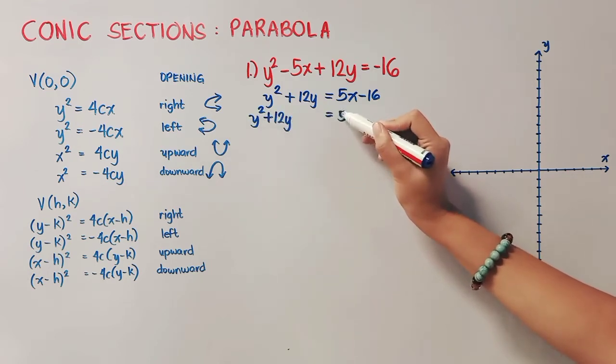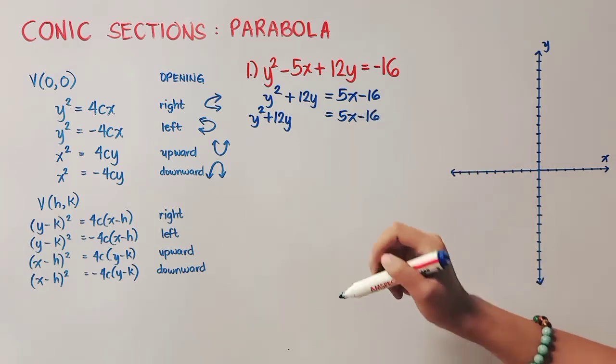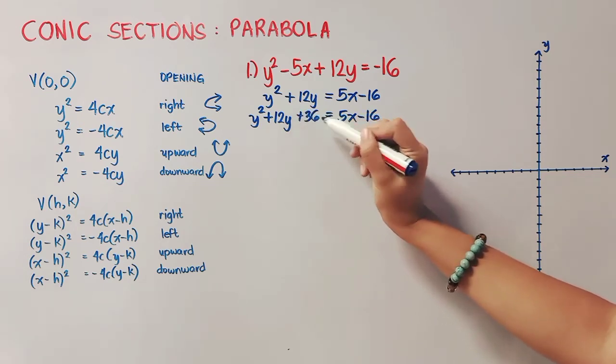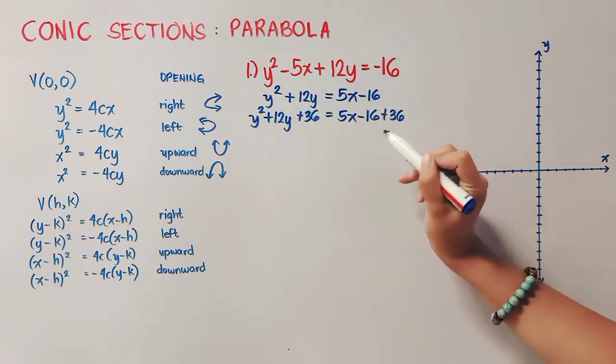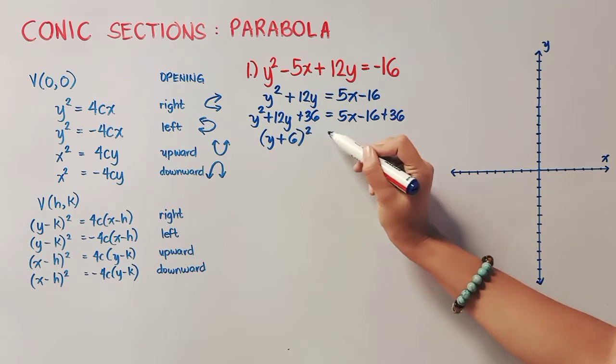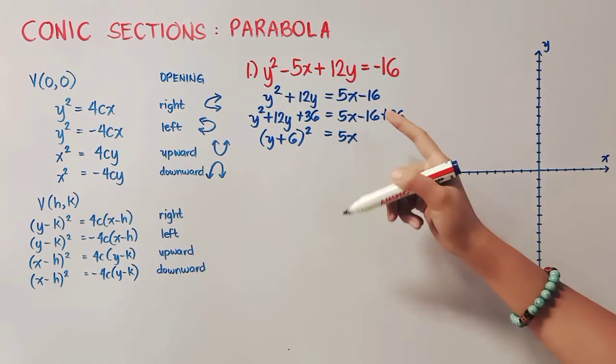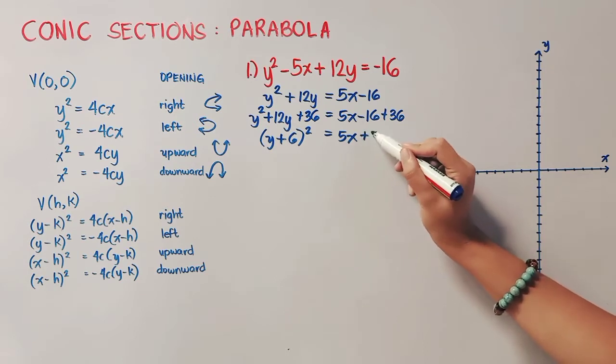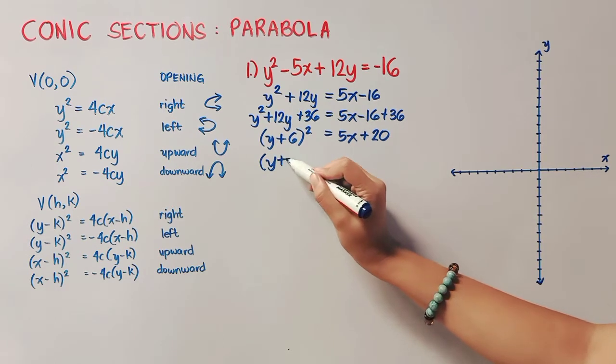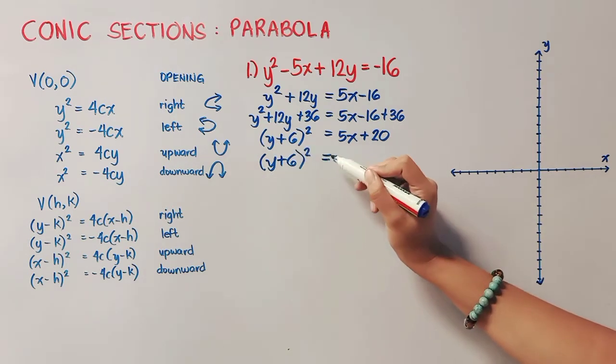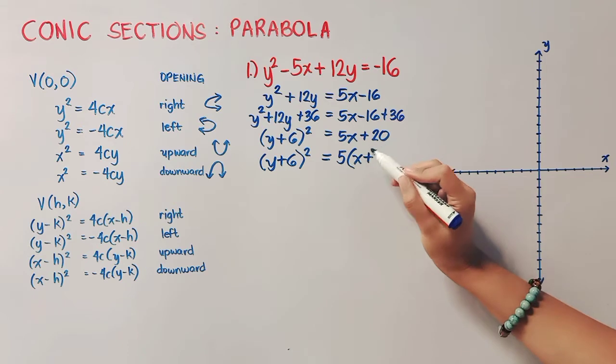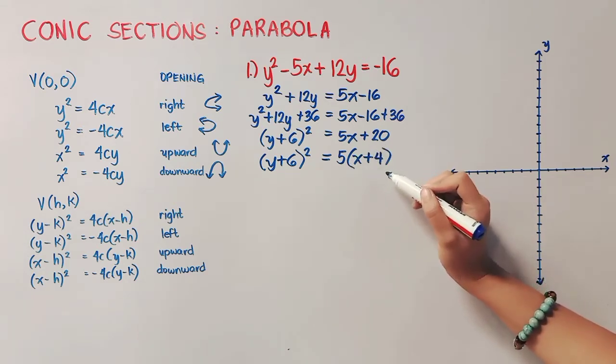Now we will copy first everything before we complete the square. Focus on the middle term. 12 divided by 2 is 6. 6 squared is 36. Also write that one on the right side to maintain the equality symbol. And we can factor this out now. Y plus 6 quantity squared and then negative 16 plus 36 is positive 20. Now we will first factor out 5 here since it is common. So 5 quantity, what's left is x. 20 divided by 5 is 4. And this is our standard form.